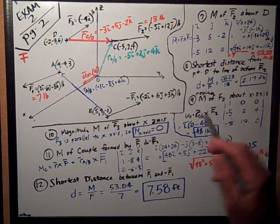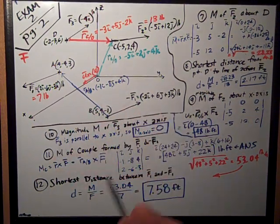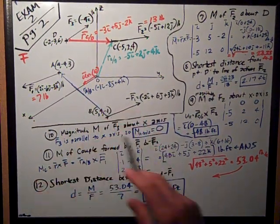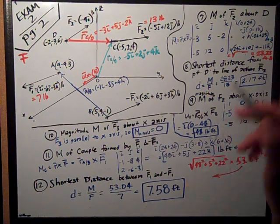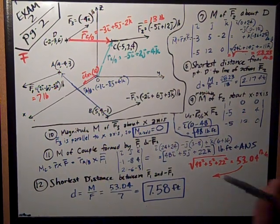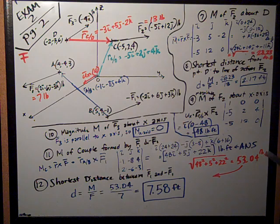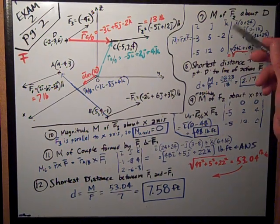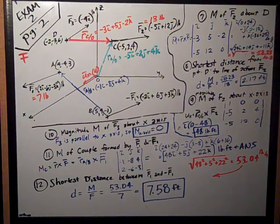So, what we had was several vectors in three-dimensional coordinates, and we want to know moments and shortest distances, couples. We'll start with what was like number seven on the test.